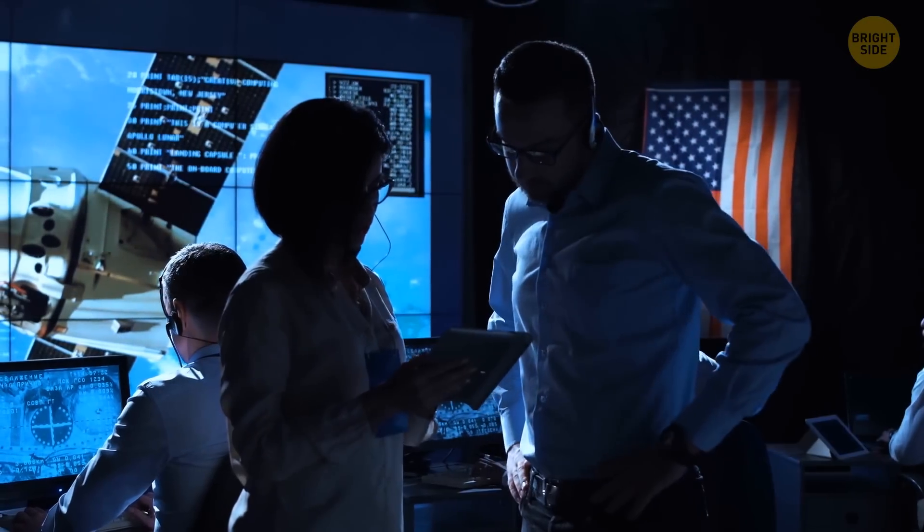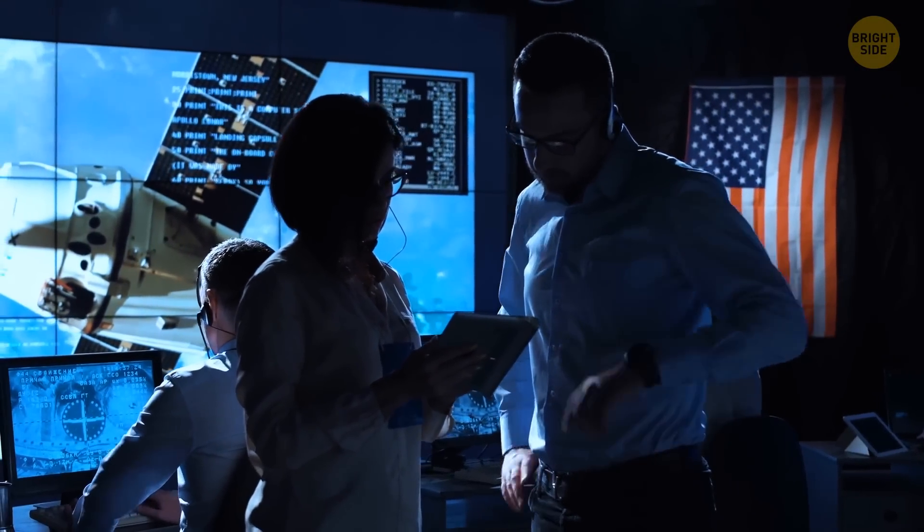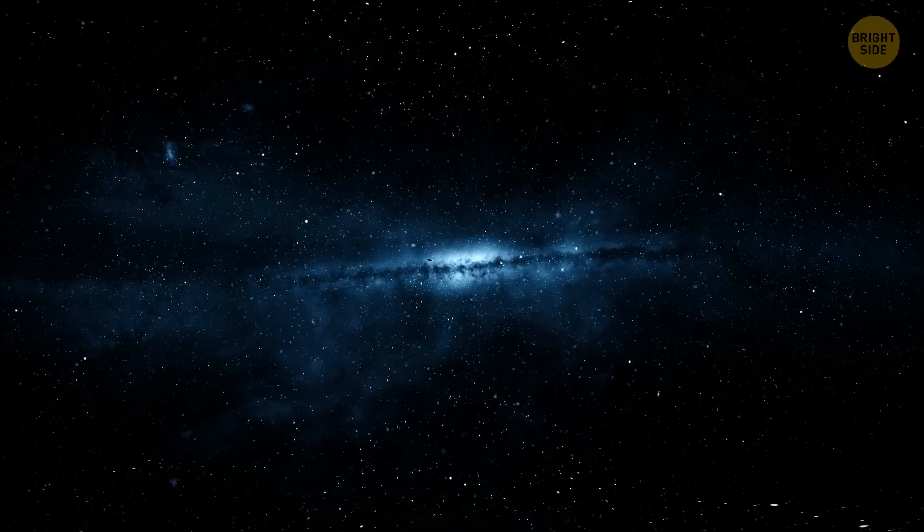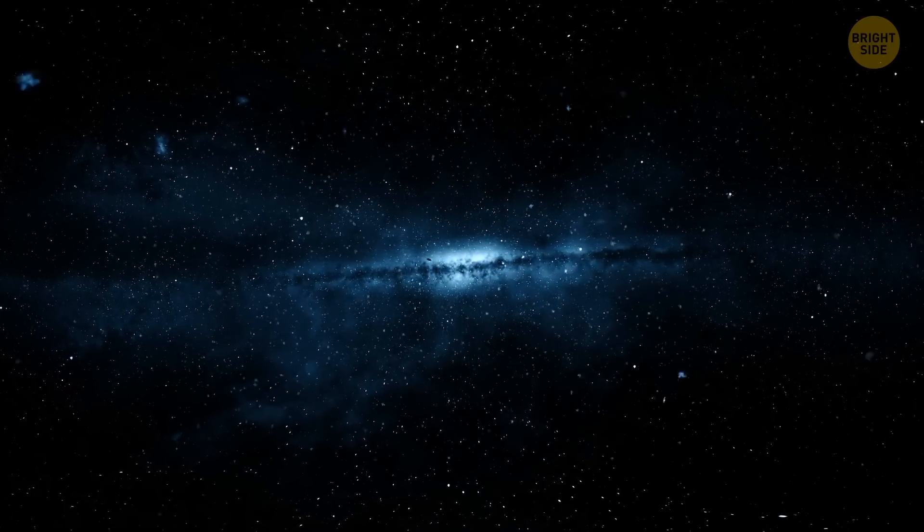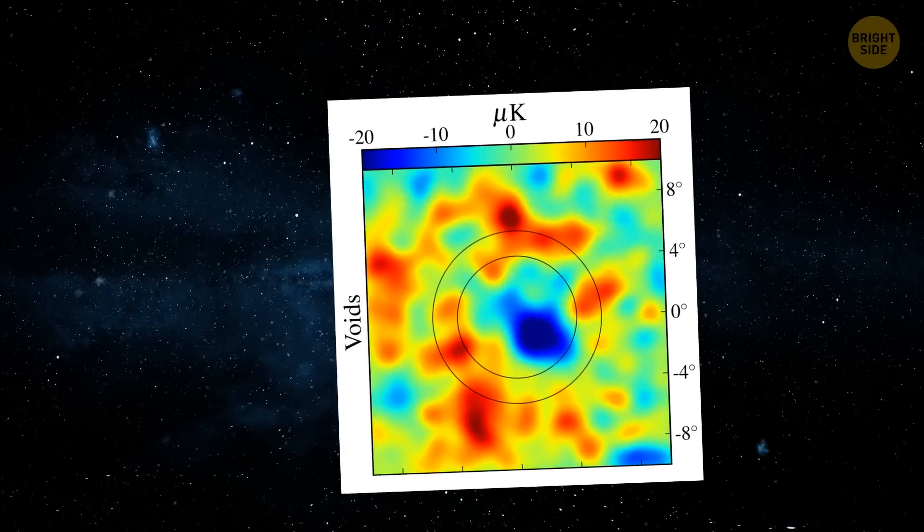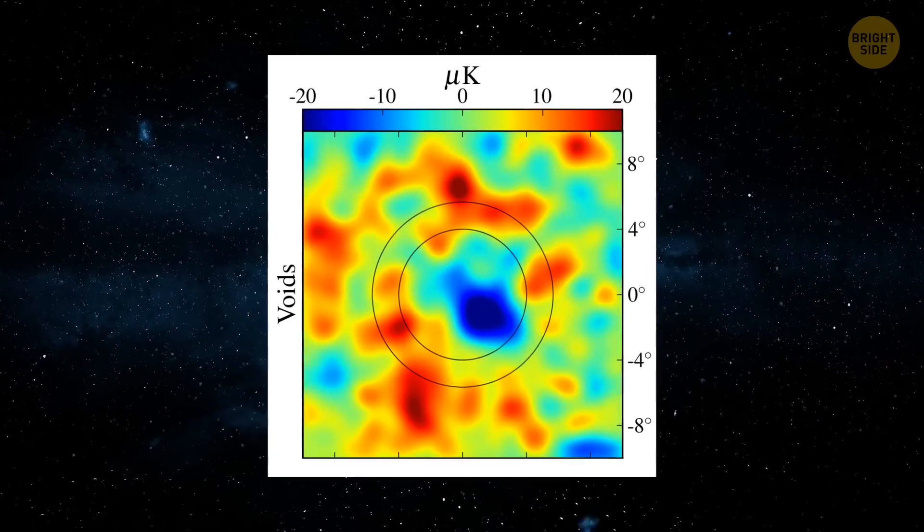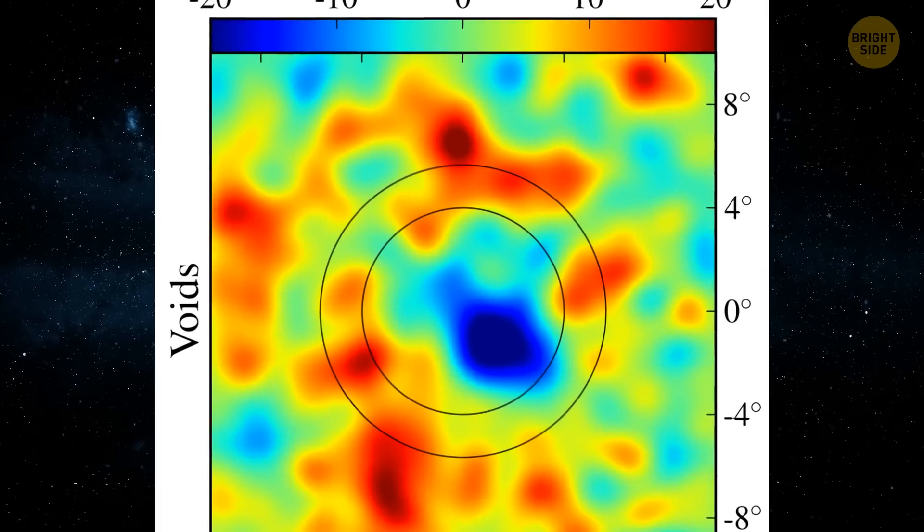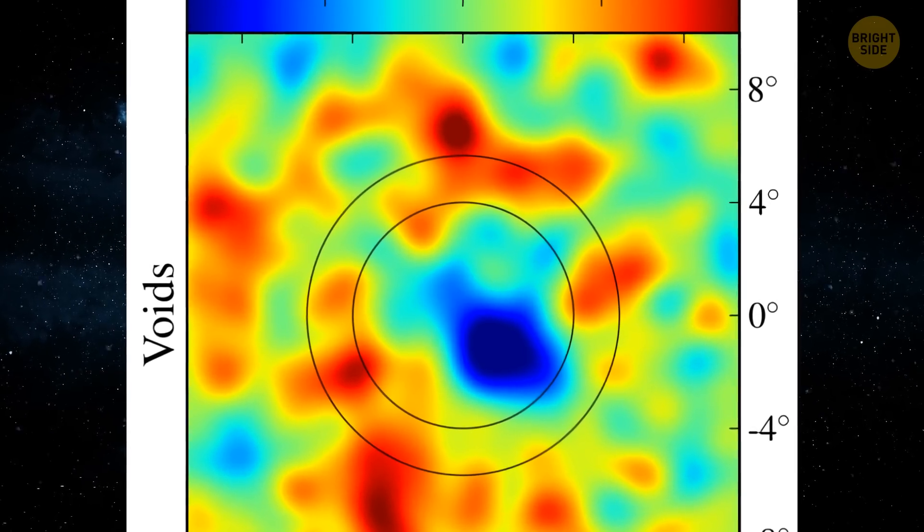Wait, the scientists thought. This can't be true. The universe should be consistent everywhere. According to our standard model, this cold spot simply shouldn't exist. But it does exist though. This isn't just some mathematical error. It's right there. So what is this cold spot and how did it appear?